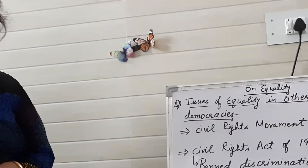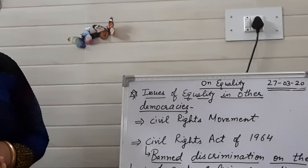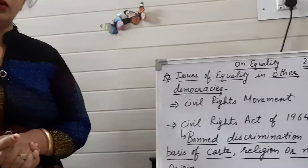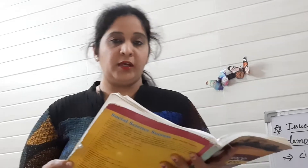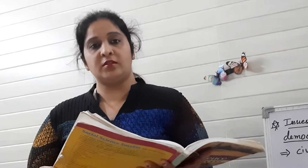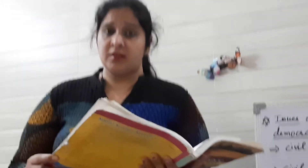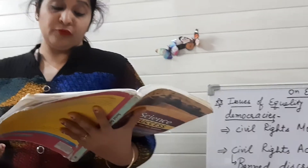It is not only in India that inequality and discrimination exist. Some other powerful democracies are also part of social discrimination — inequality and discrimination also exist in these countries. Today we will take the example of the USA.